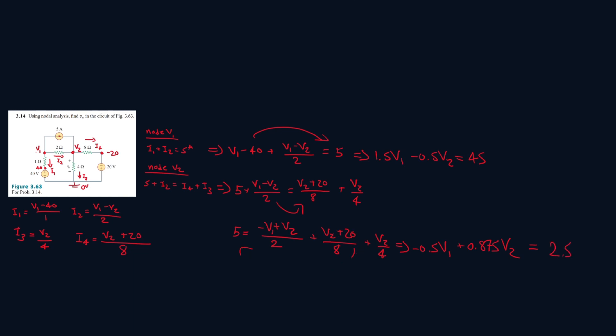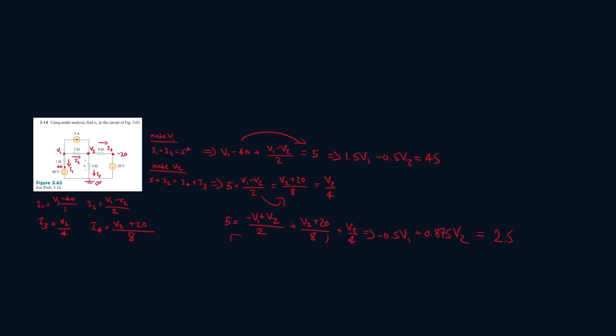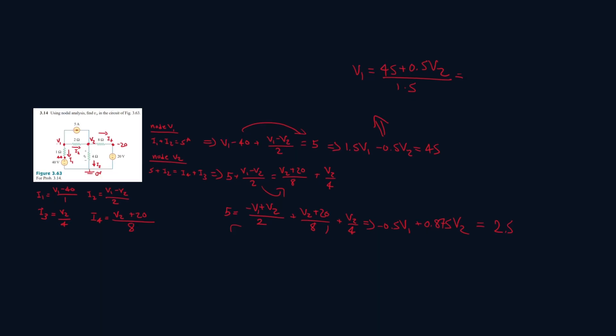Now let's isolate for one of them, so we can get our answer. So let's work with this one. So let's isolate for V1, so 1.5 V1, and let's bring the minus 0.5 V2 to the other side, so it'll be 45 plus 0.5 V2, divide both sides by 1.5. And this turns into 45 divided by 1.5, that's 30. And 0.5 divided by 1.5, that's 1 over 3.